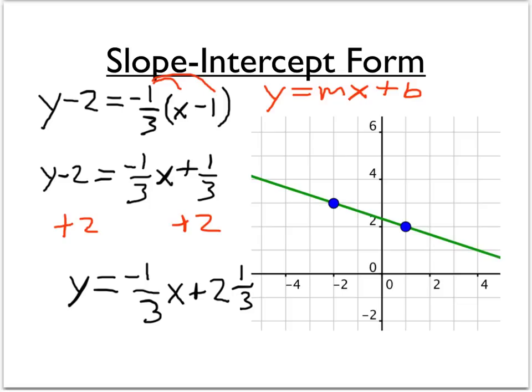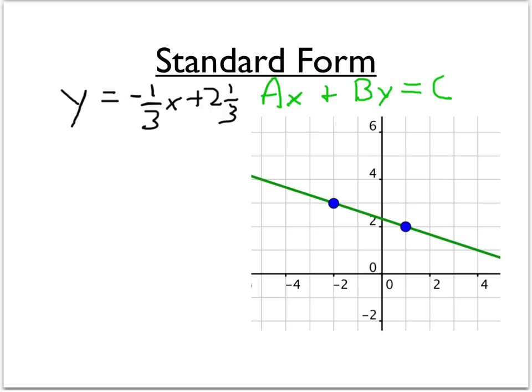Next, let's take that and convert it into standard form. So we want to take our slope-intercept form and turn it into standard form. Remember, a, b, and c are all integers, and in particular, a is a positive integer.